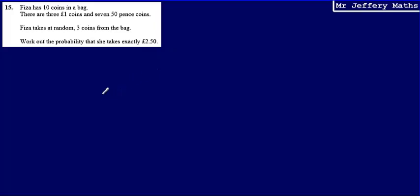This is question 15. We're told that Fizzer has 10 coins in a bag — three £1 coins and seven 50p coins. Fizzer takes at random three coins from the bag, and we're asked to work out the probability that she takes exactly £2.50.